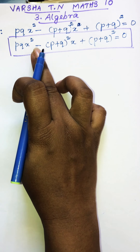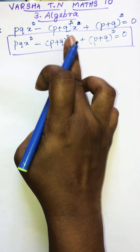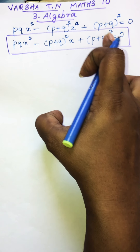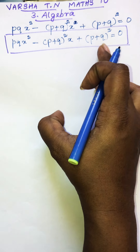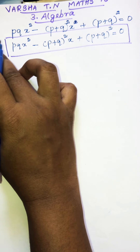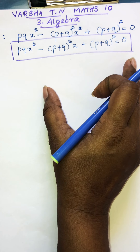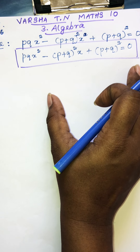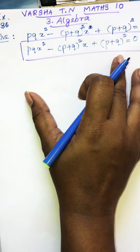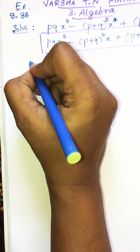The equation is: pq·x² minus (p plus q)²·x plus (p plus q)² equals 0. We are going to solve this using the formula method. You know there is the factorization method and the formula method — we will use the formula method.